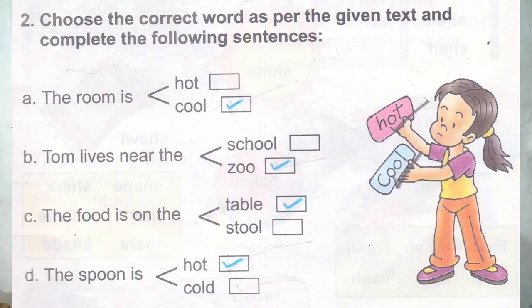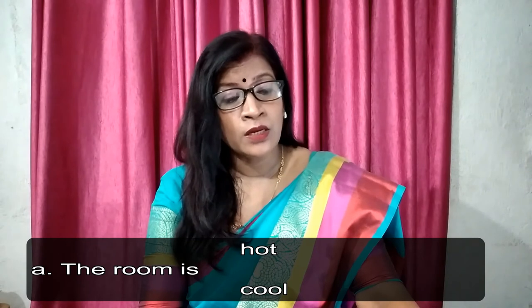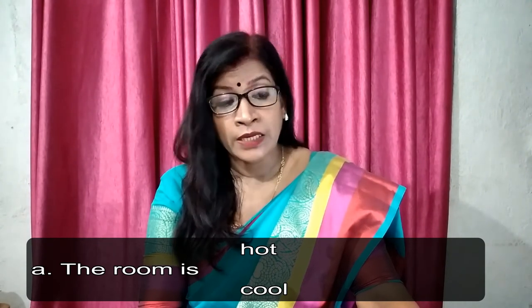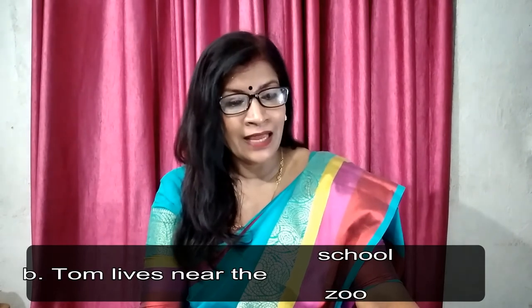These are the certain questions which you need to answer in this chapter. Beyond this, another activity is there: choose the correct word from the given text and complete the following sentences. In question A, 'the room is hot or cool' — the room is cool, so put a tick in the box where 'cool' is written.